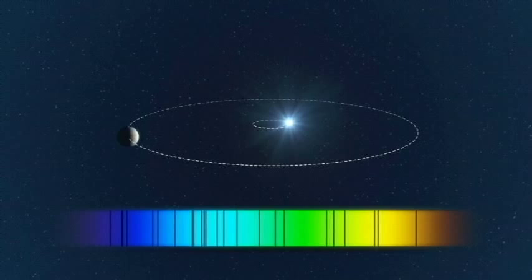Some of the starlight gets absorbed as it passes through the star's atmosphere, and this produces small dark gaps or lines in the spectrum.